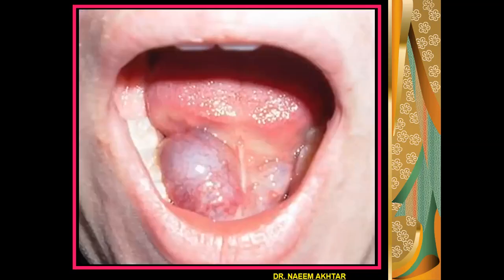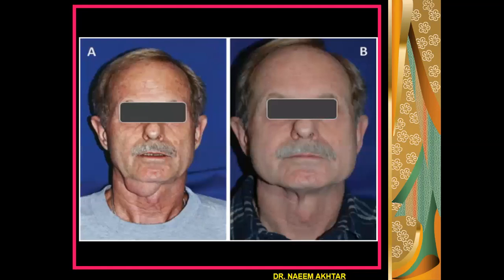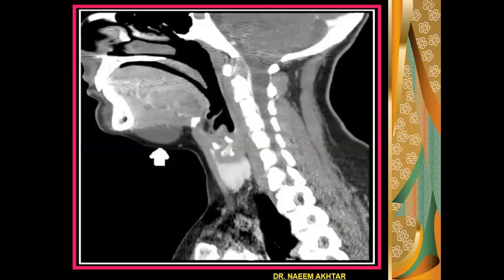This photograph shows the ranula in the floor of mouth on the right side of the frenulum. This patient is having a swelling in the neck — this is a plunging ranula. This CT scan of the head and neck in a sagittal or parasagittal view shows a plunging ranula shadow in the submental region, indicated by the arrow.